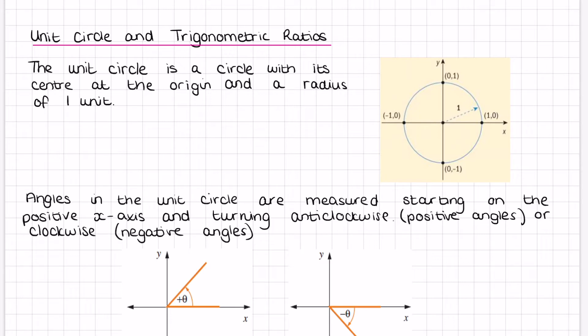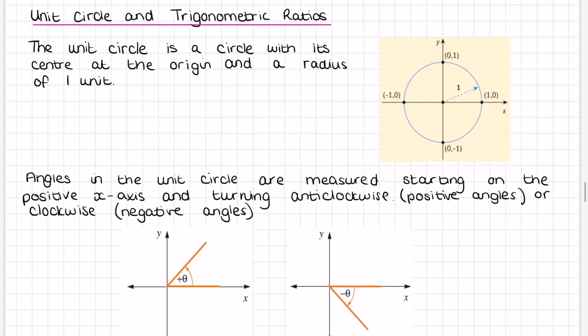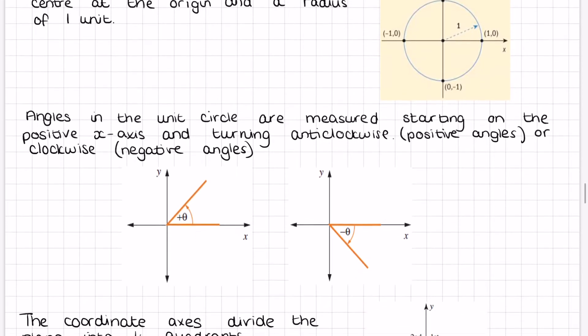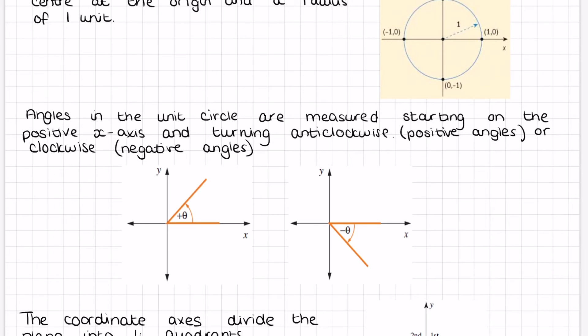Angles in the unit circle are measured starting on the positive x-axis and turning anticlockwise. There will be positive angles going anticlockwise, or clockwise, which will give you negative angles. So it always starts on the x-axis and, for positive angles, goes anticlockwise.